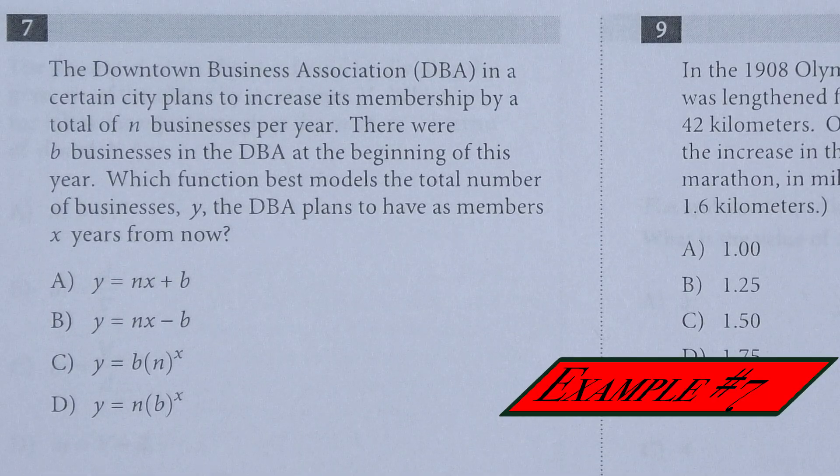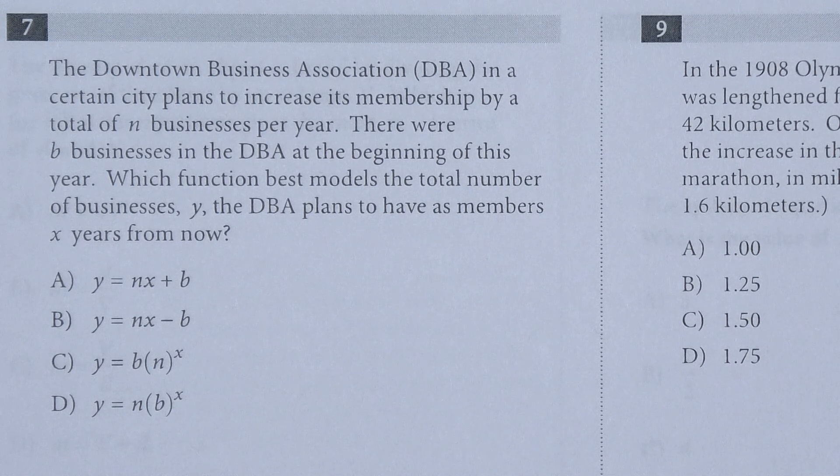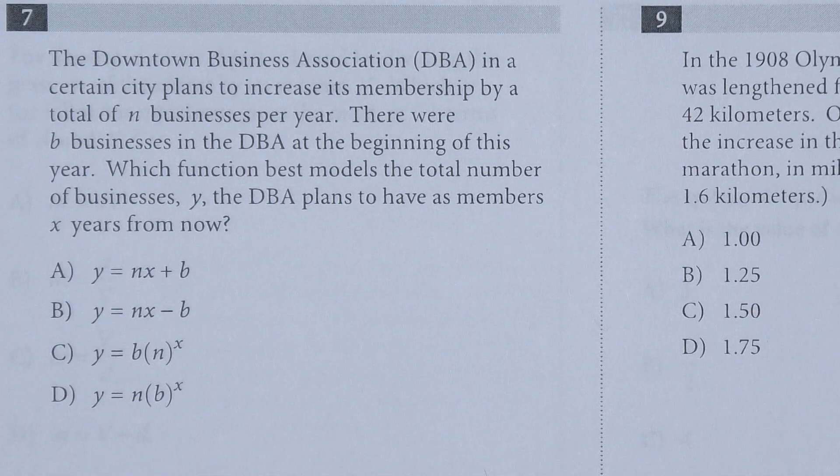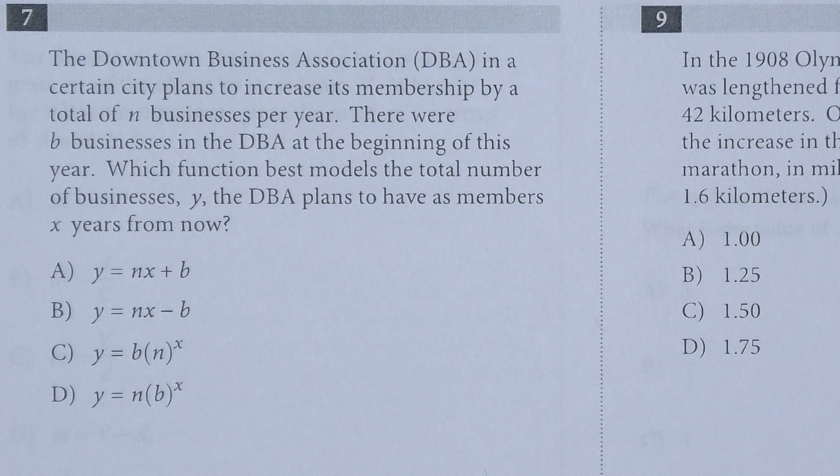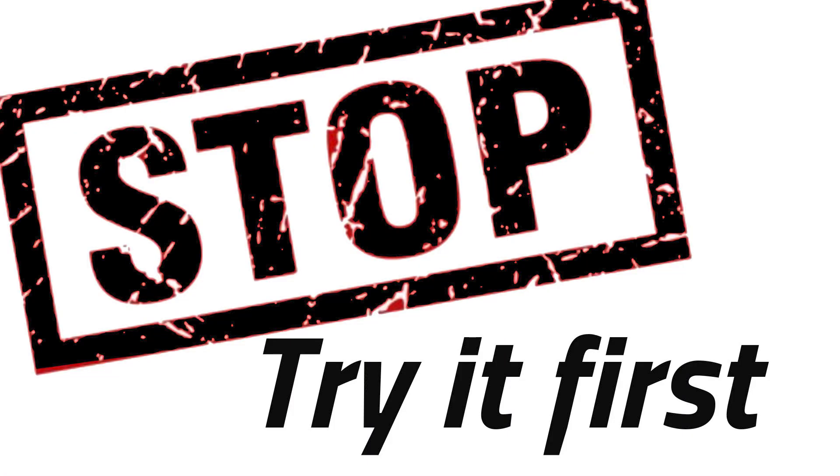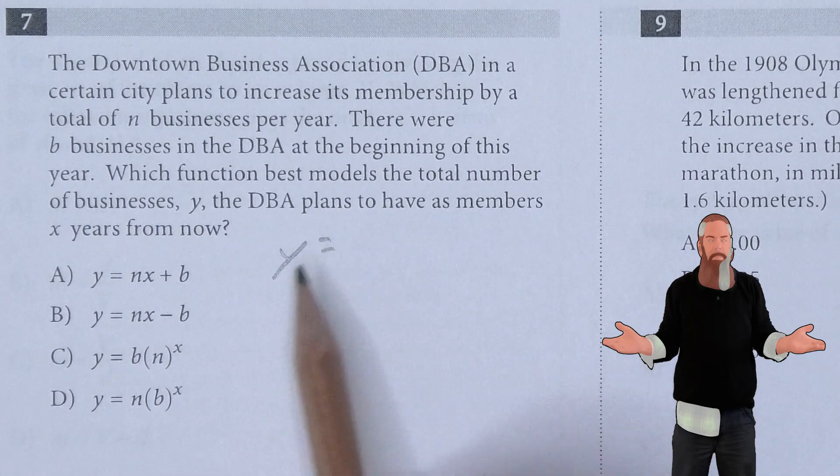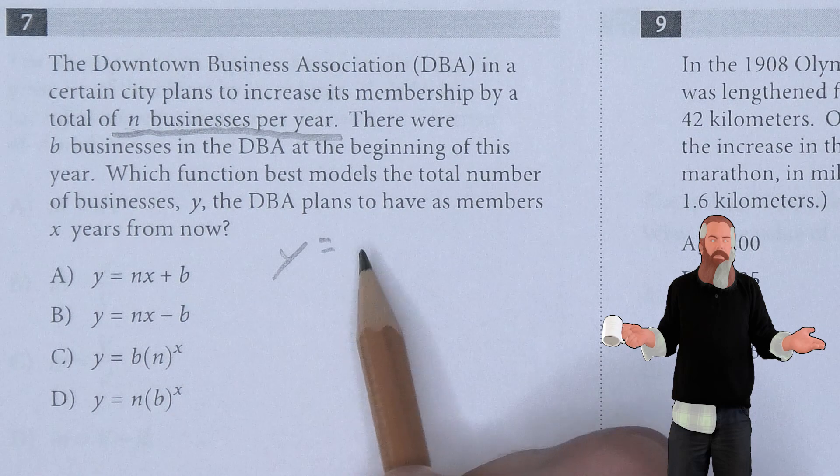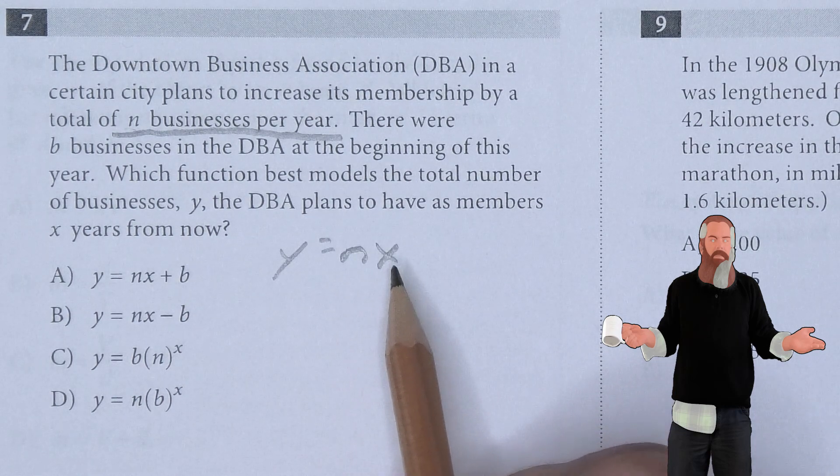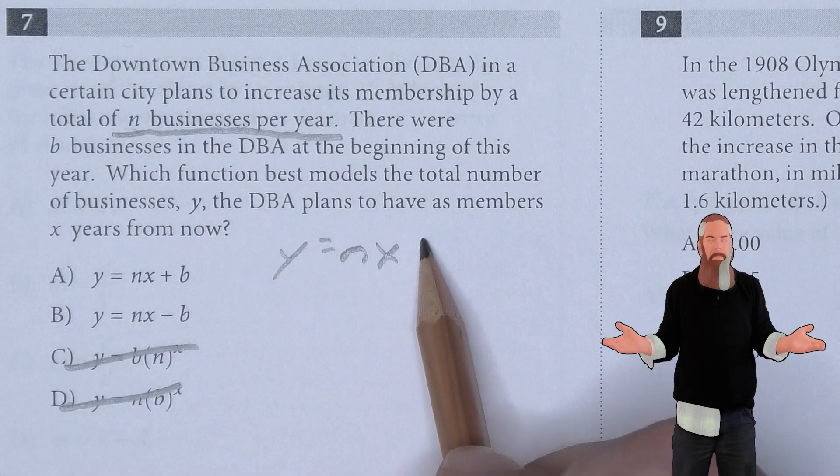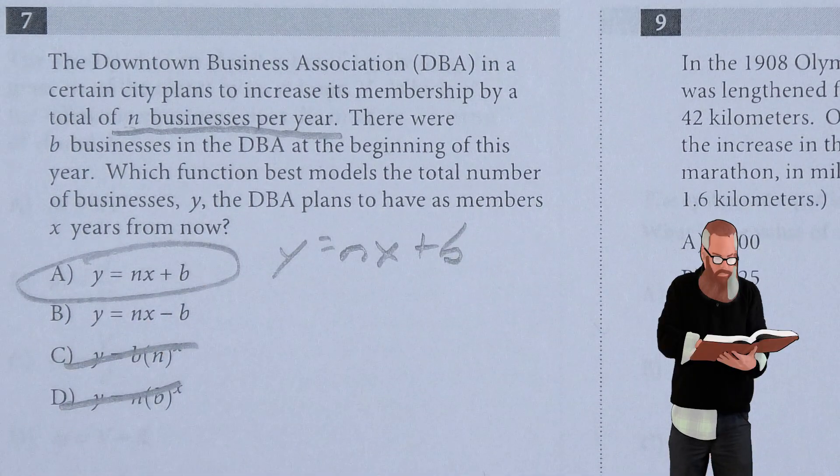The Downtown Business Association (DBA) in a certain city plans to increase its membership by a total of N businesses per year. There were B businesses in the DBA at the beginning of this year. Which function best models the total number of businesses Y the DBA plans to have as members X years from now? We know we need Y equals. We want to increase by N businesses per year, meaning N times X. We also know there were already B businesses, meaning we have A as the answer.